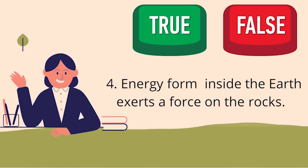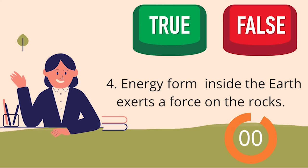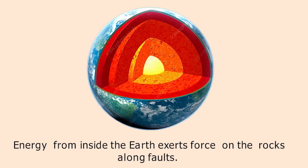Number 4: energy formed inside the Earth exerts a force on the rock. That is right! Energy from inside the Earth exerts a force on the rocks along a fault. This energy from inside the Earth makes the rocks bend. Using a modulator, you will see how this happens.